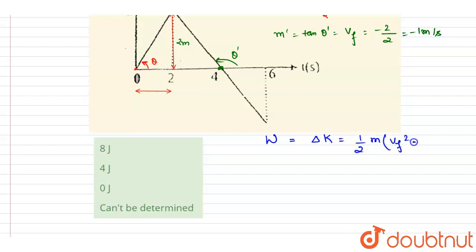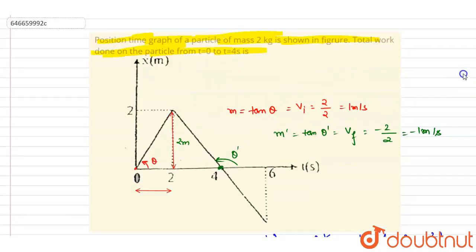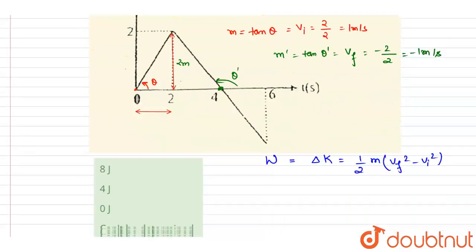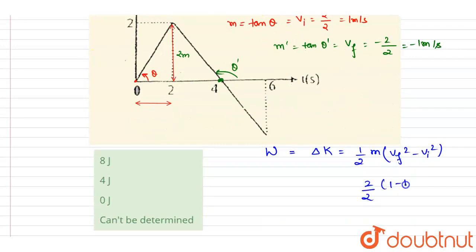So final and initial both are one and one, and the mass is two. So just put the value. We'll write down two into two by two into one minus one, that is zero. And this is the answer. Now you can check here, C is the correct. Thank you.